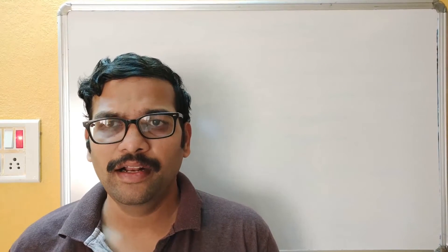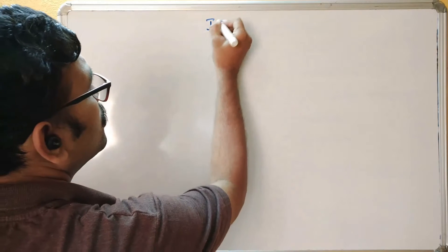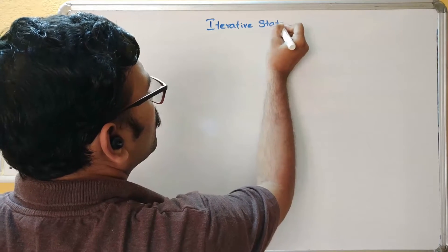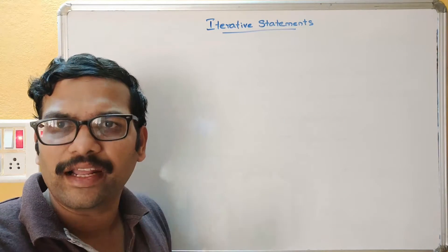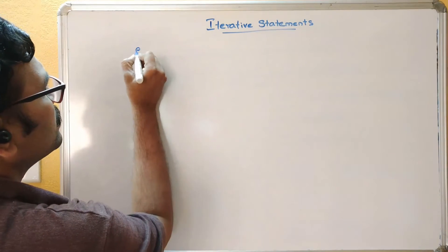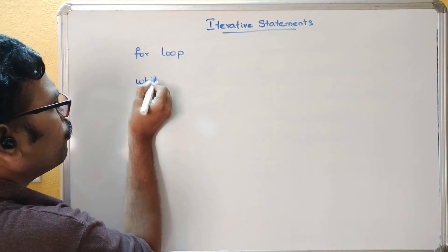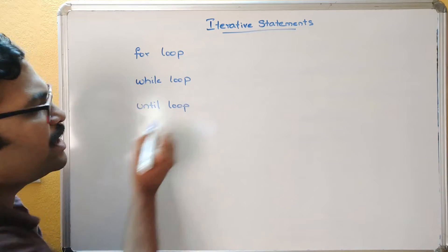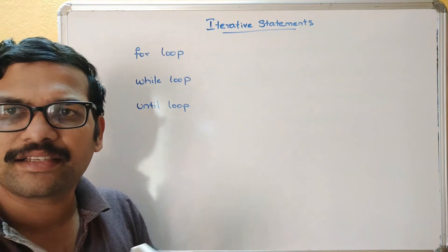Welcome back to our channel. In today's session we'll discuss complete iterative statements in shell scripting. Iterative statements in shell scripting are divided into three categories: for loop, while loop, and until loop. We'll see each one by one — the syntax and later the implementation in the terminal.